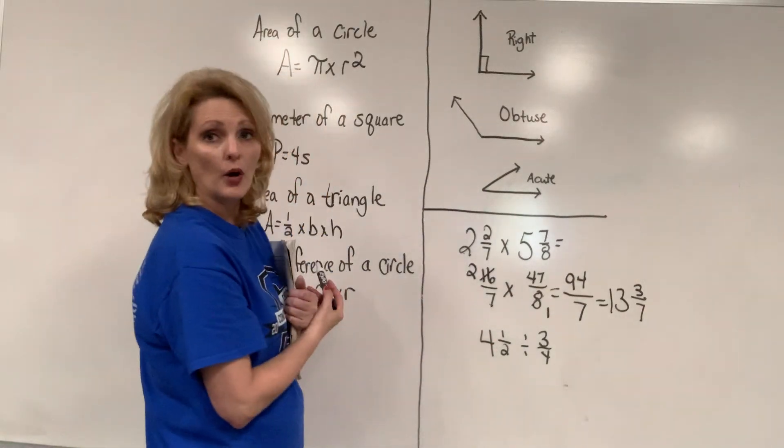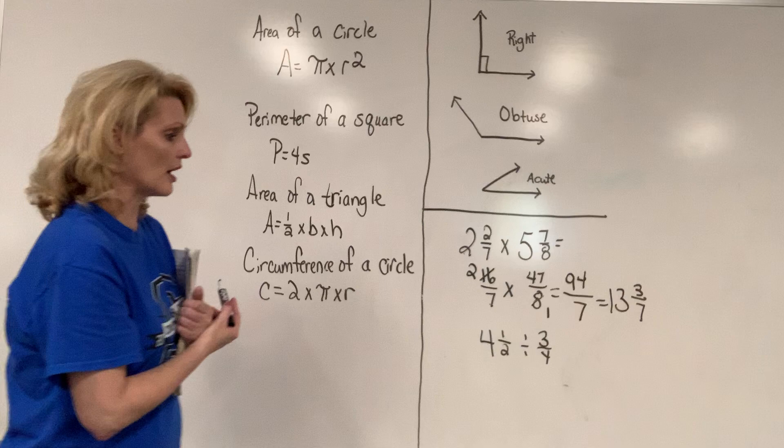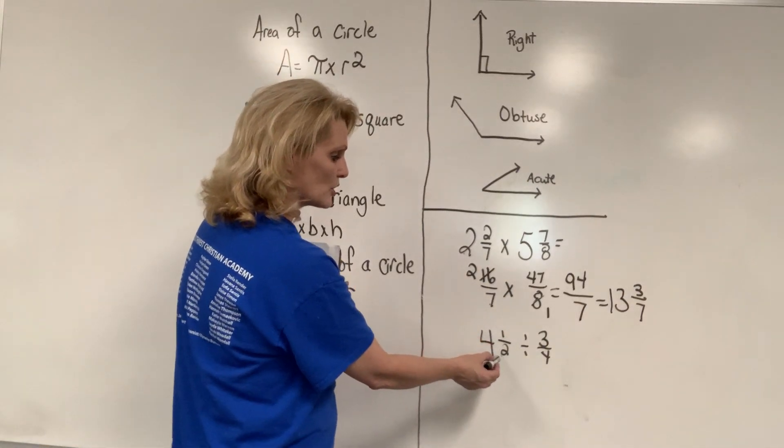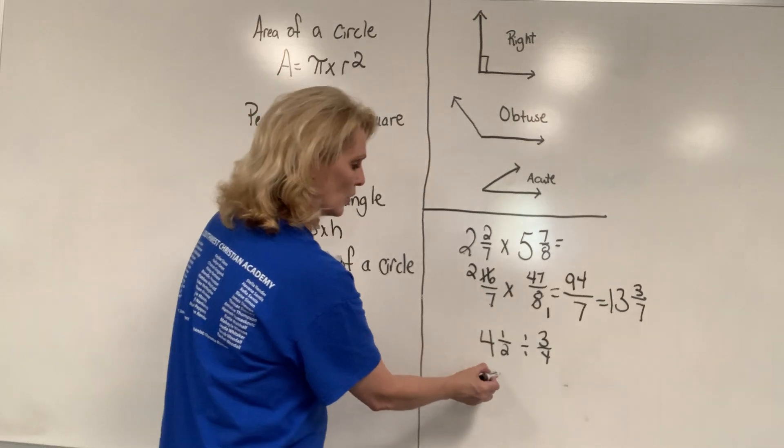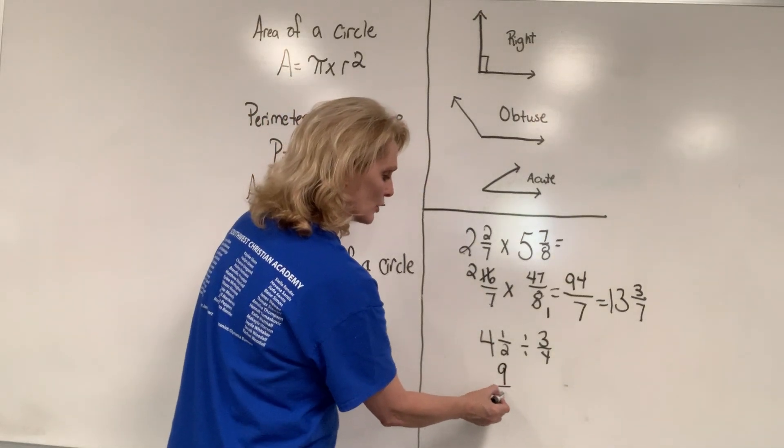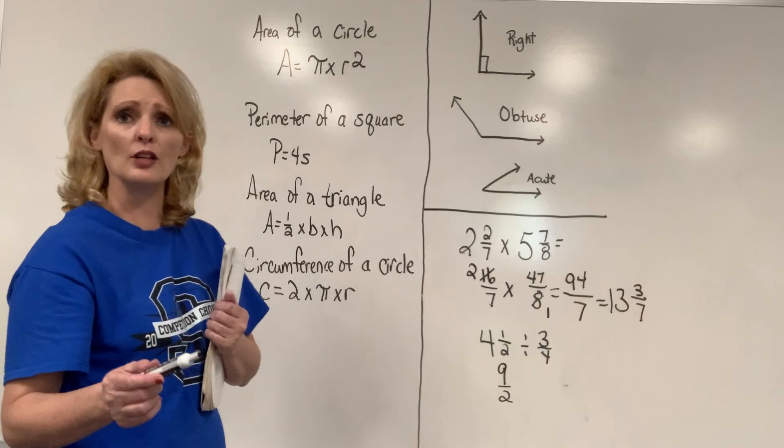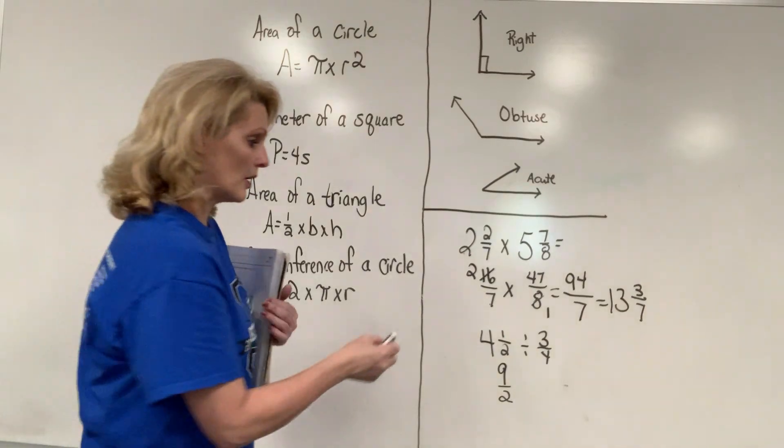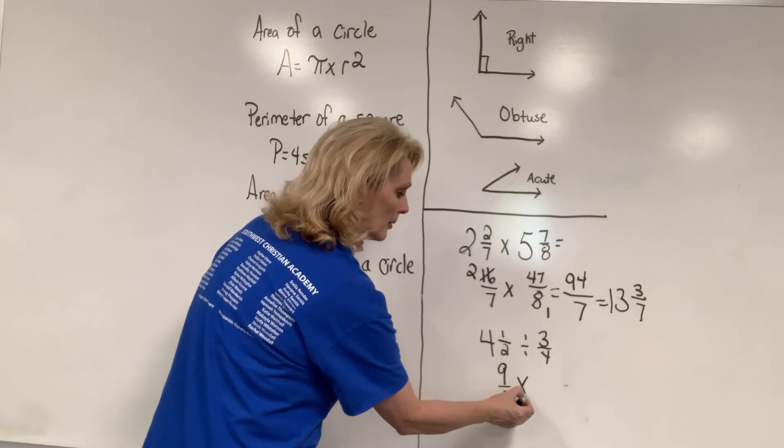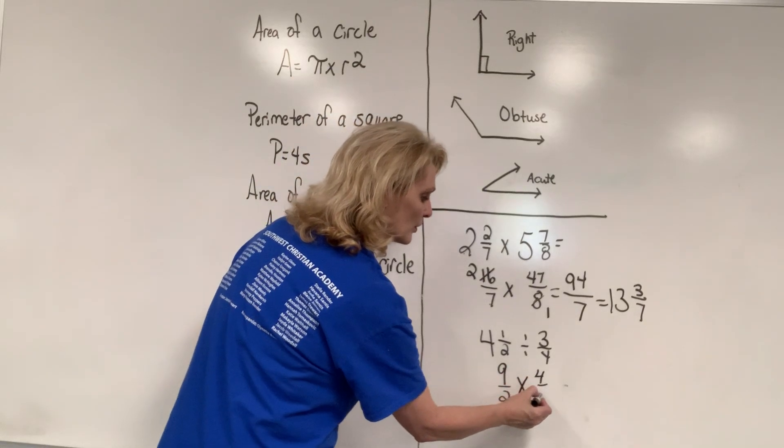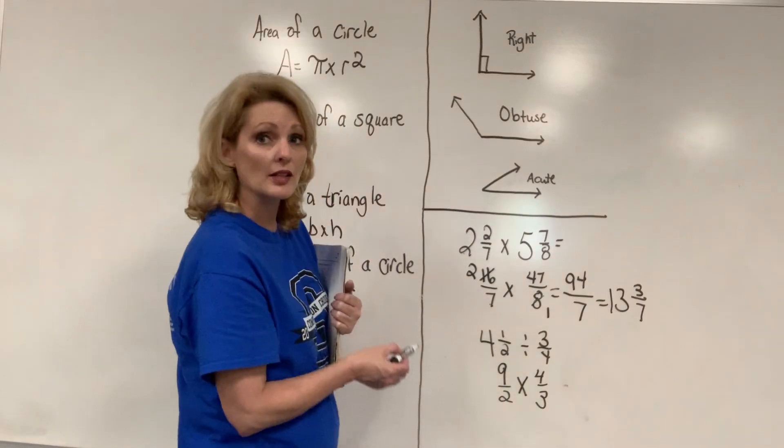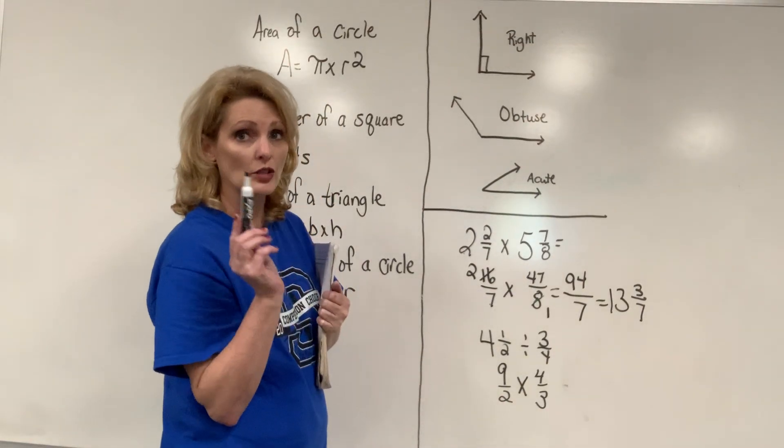So then we have a division problem with mixed numbers. So we have multiply the bottom, add the top, which is 4 times 2 is 8 plus 1. So you have 9 over 2. You're going to change that second fraction. You're going to flip it and make it into a multiplication problem. So it'll be 4 over 3. So then you have, can you cancel out within? Always do that first.